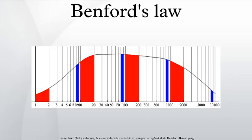For example, in sets which obey the law, the number one would appear as the most significant digit about 30 percent of the time, while larger digits would occur in that position less frequently — nine would appear less than 5 percent of the time. If all digits were distributed uniformly, they would each occur about 11.1 percent of the time.